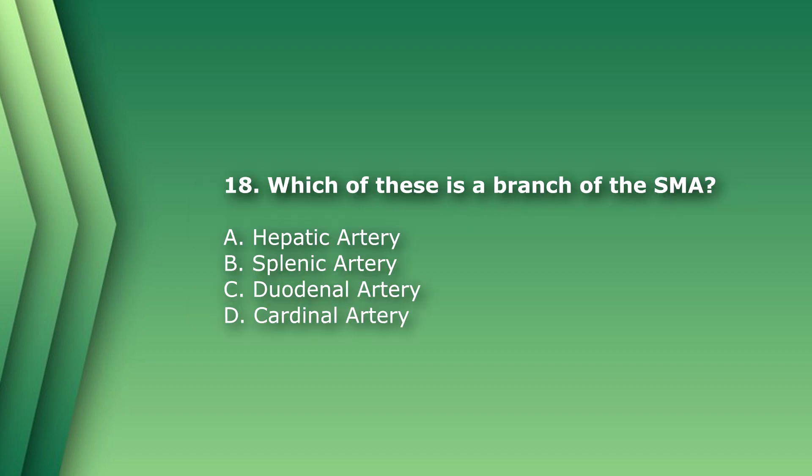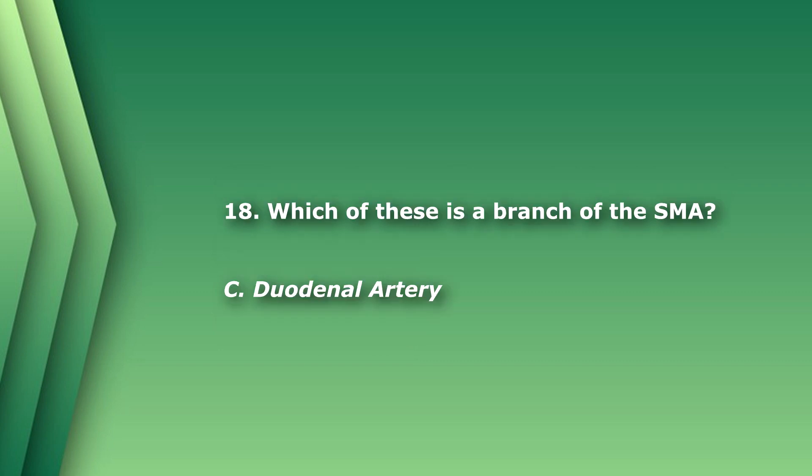Question 19: Which of these is a branch of the superior mesenteric artery? A) hepatic artery, B) splenic artery, C) duodenal artery, or D) cardinal artery. The hepatic and splenic arteries are branches of the celiac axis. The cardinal artery is not real. The answer is C) duodenal artery.